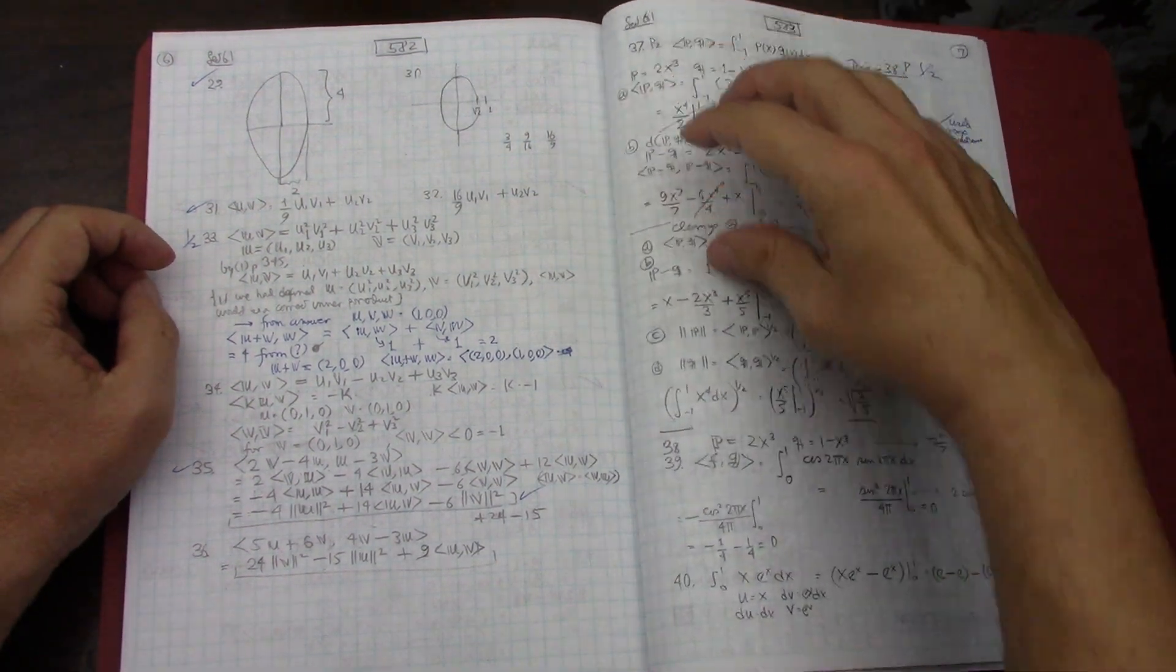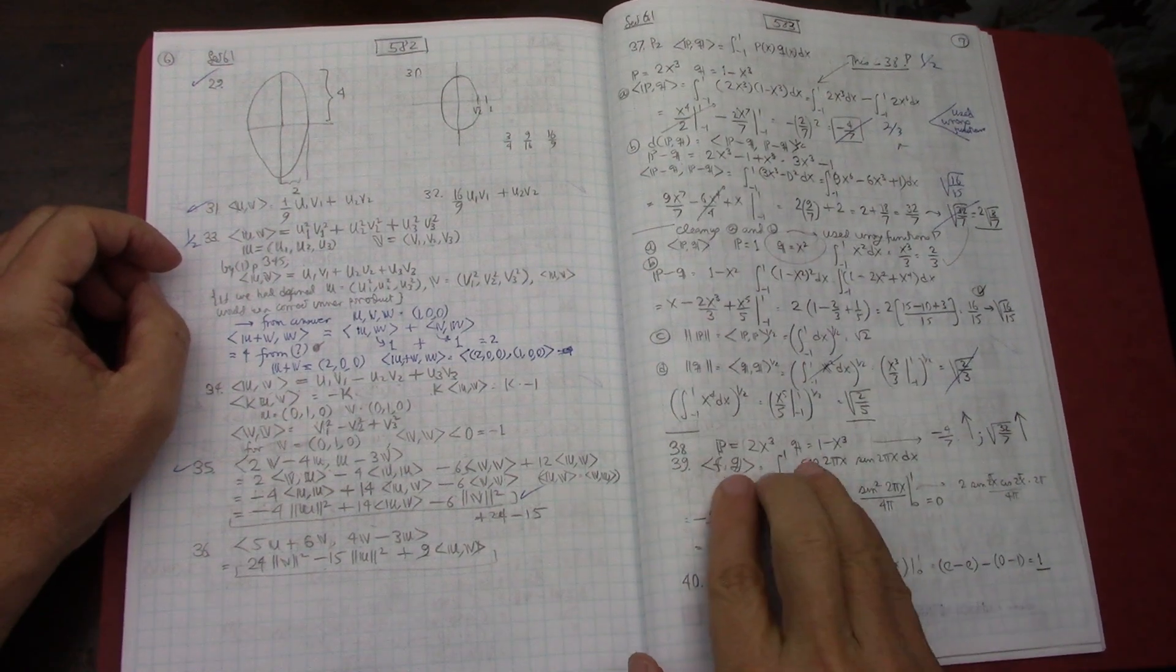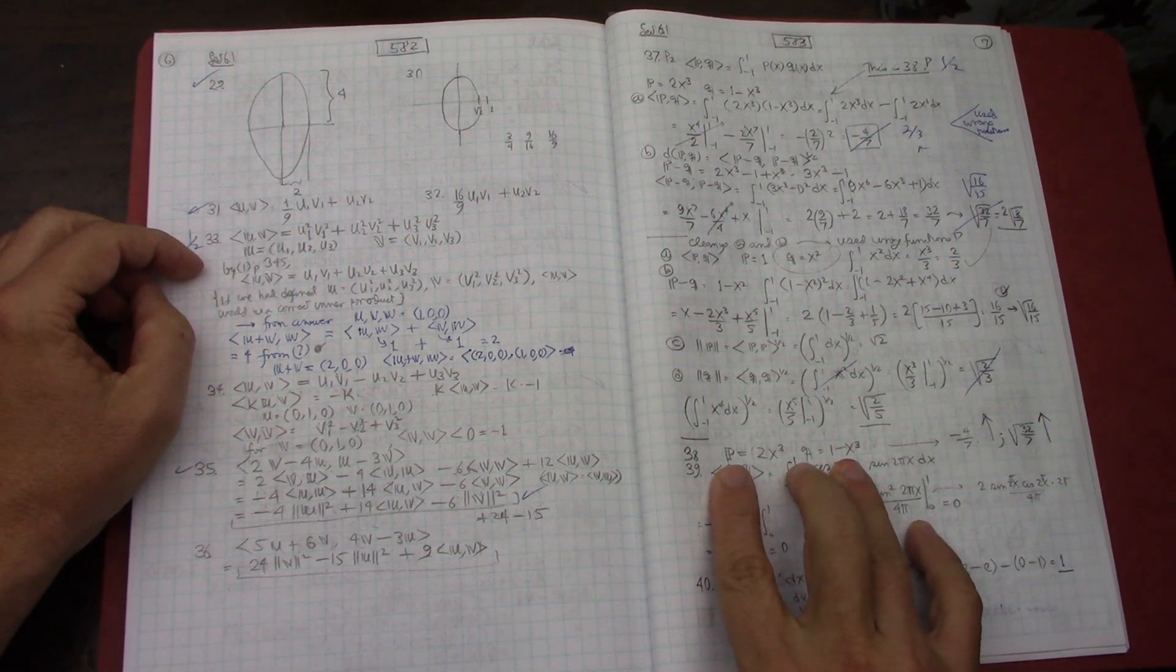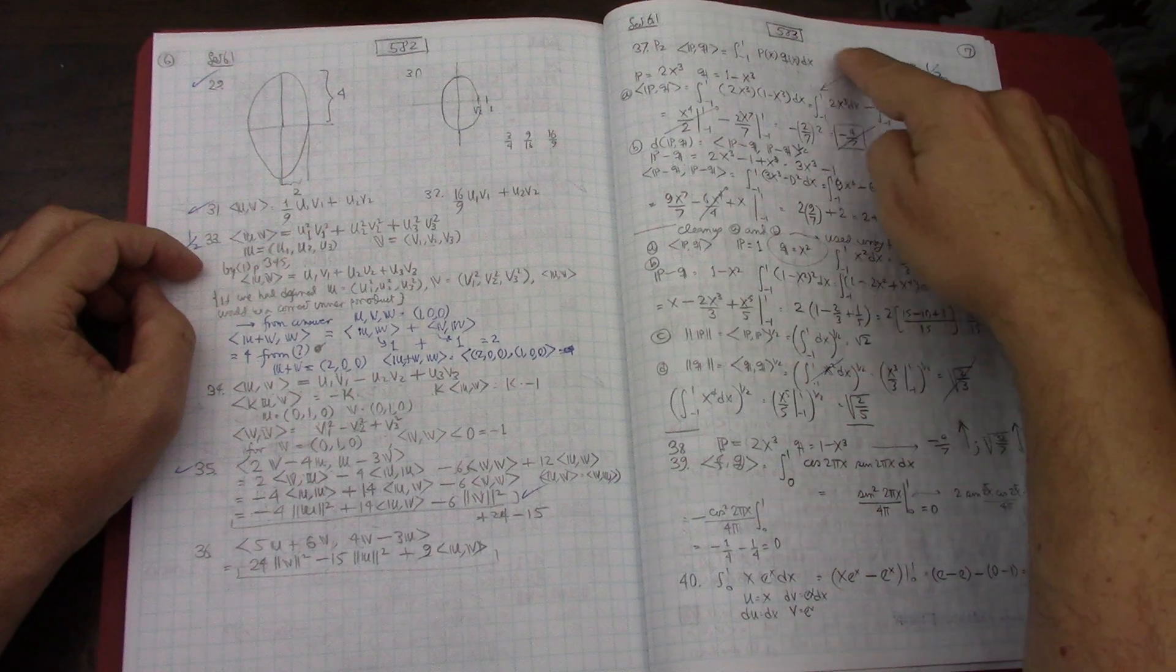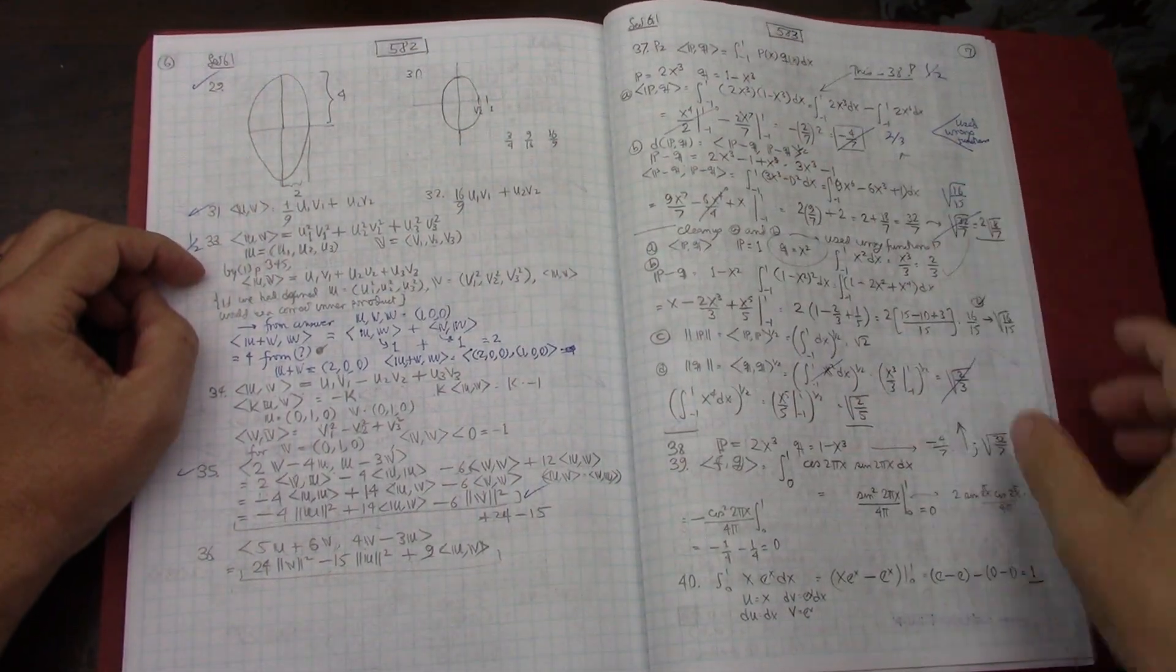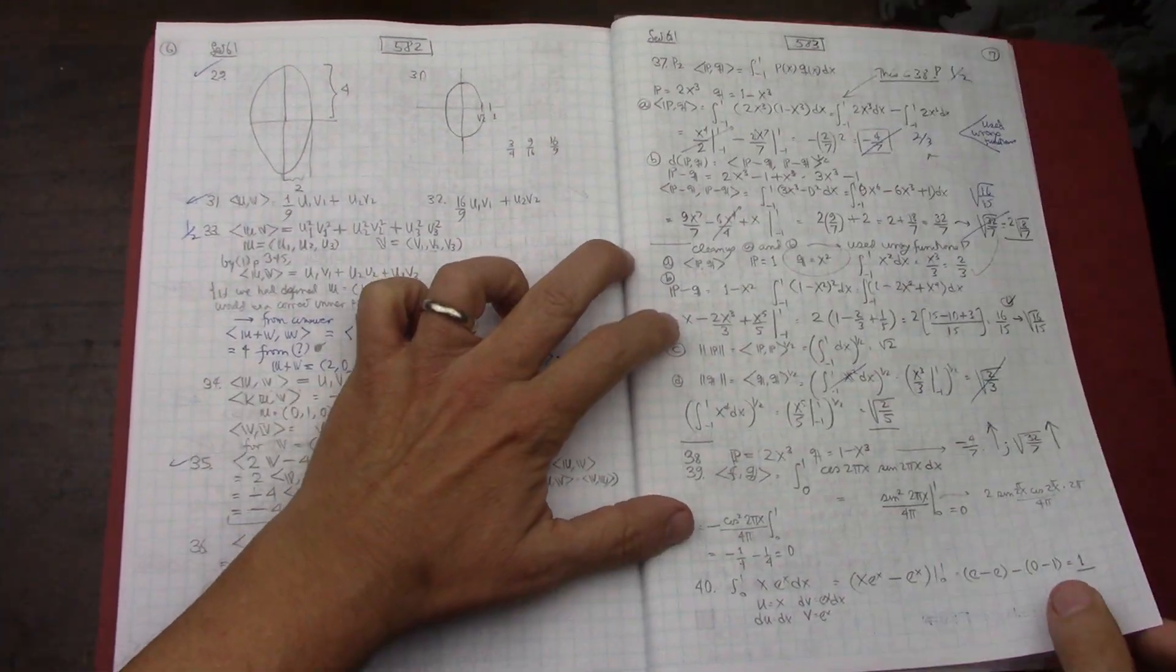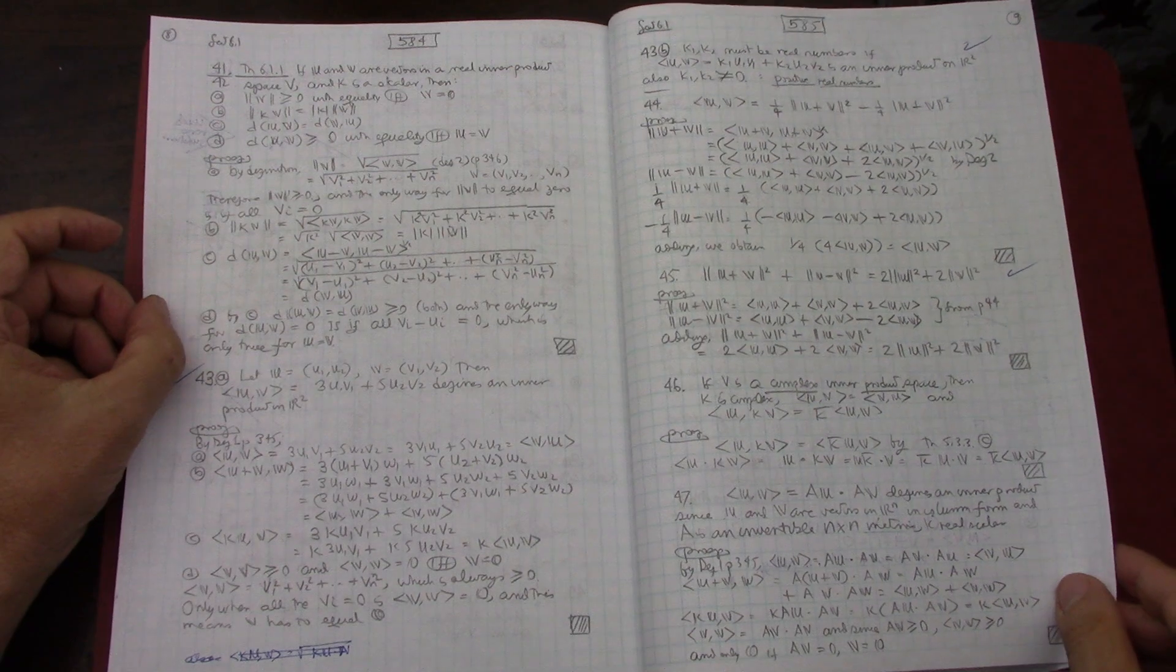I made a mistake where I was doing problem 37 and I actually did it for the polynomials in question 38. So I had to redo it all over again to actually do 37, but for 38 I had already done it. It happens sometimes—I've made that mistake before.